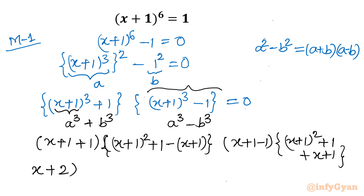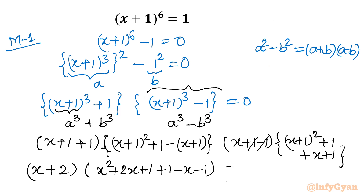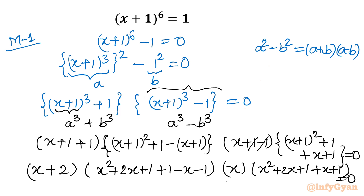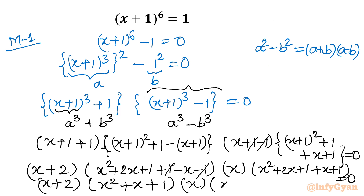Simplifying, the first factor becomes x plus 2. From the first curly bracket: x squared plus 2x plus 1 plus 1 minus x minus 1. The plus 1 and minus 1 cancel, leaving x. The last bracket gives x squared plus 2x plus 1. Setting the whole expression equal to 0 and cleaning up: the second bracket becomes x squared plus x plus 1, the third term is just x, and the fourth bracket becomes x squared plus 3x plus 3.